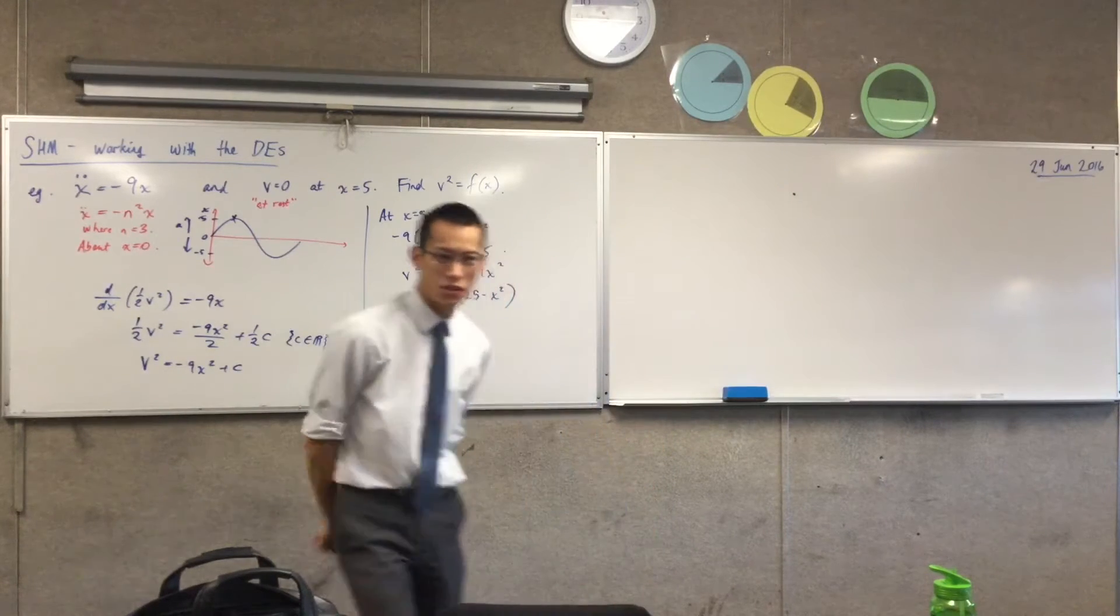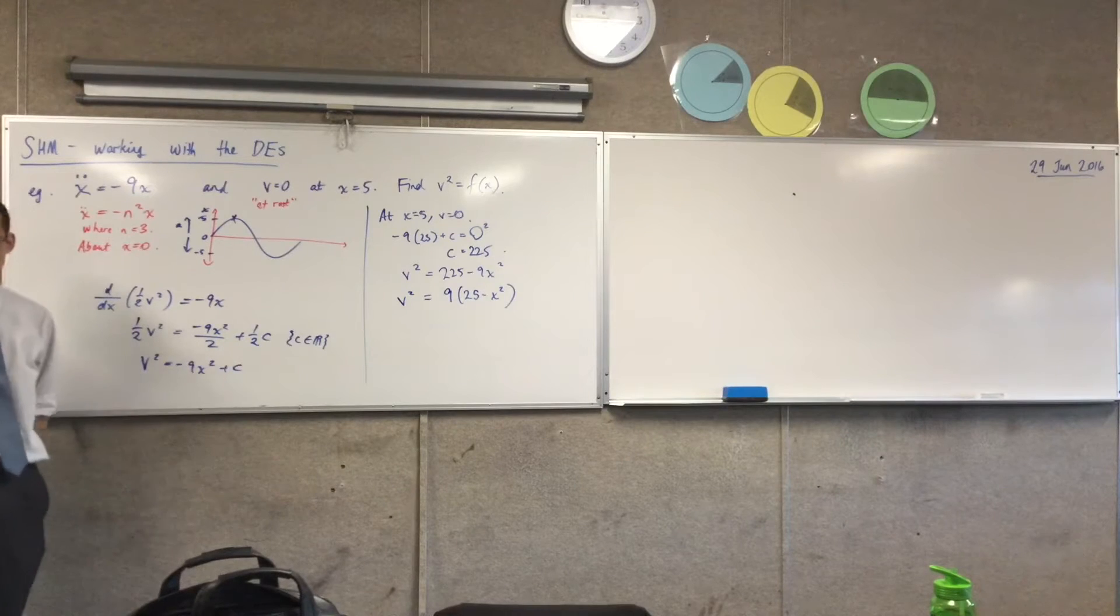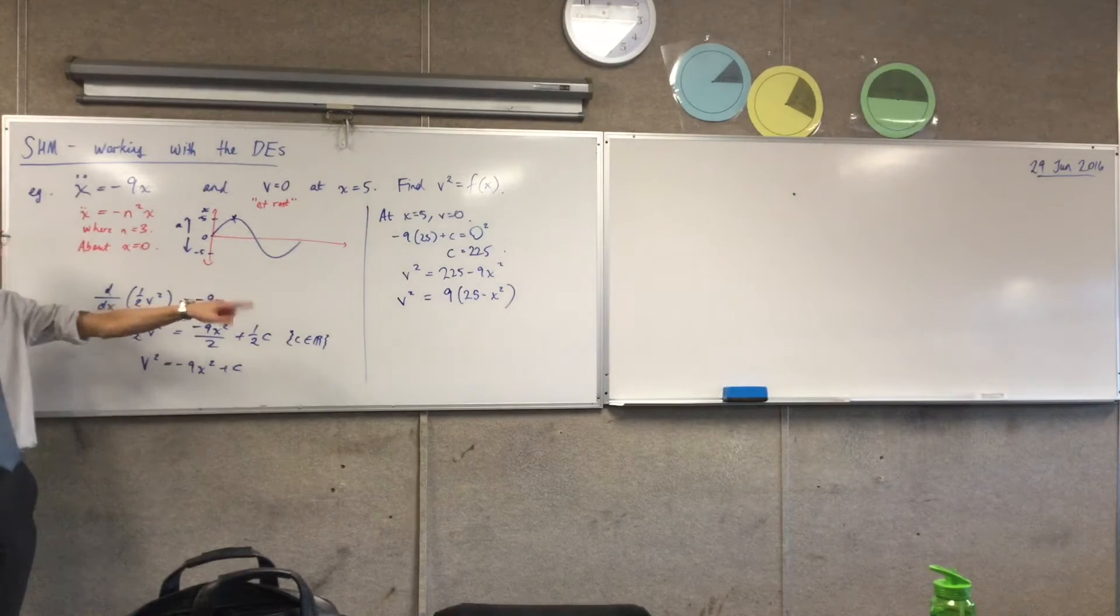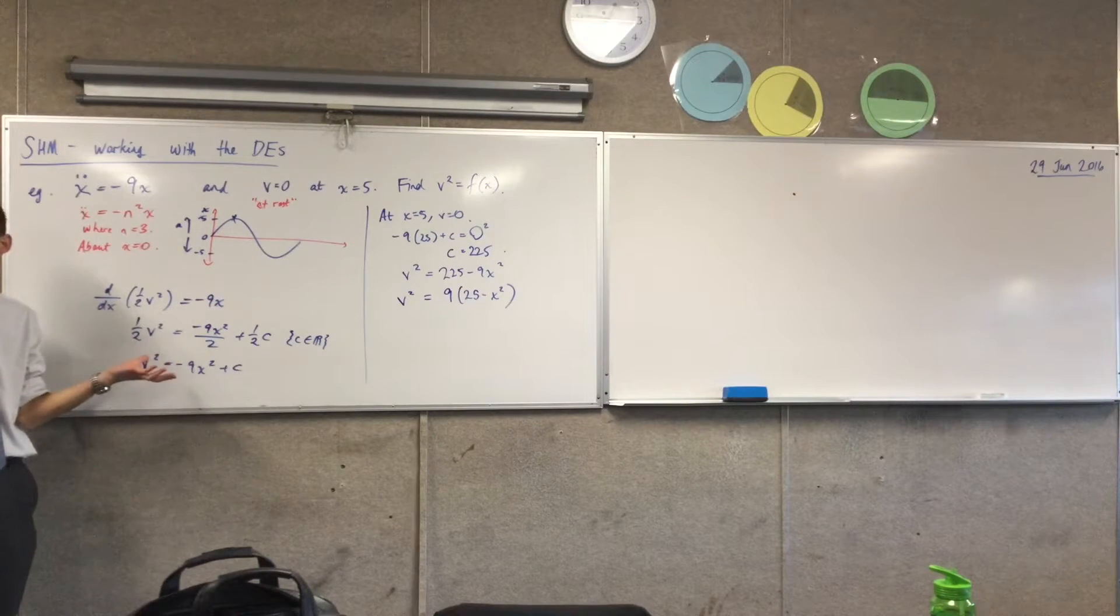Now this line, it makes me suspicious. It makes me very suspicious. It's true, by the way, it's correct. It's not suspicious because it's wrong. I'm suspicious because the numbers look very similar to the numbers that I started with. Do you see the similarities, right?